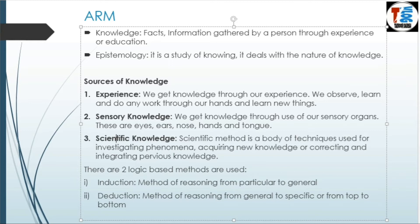Deduction is a method of reasoning in which we use a general to specific method — a top-to-bottom approach. We observe a large amount of data and make a specific argument. For example: all oranges are fruit; all fruits grow on trees; hence, all oranges grow on trees.